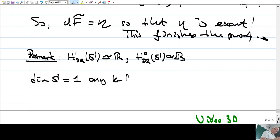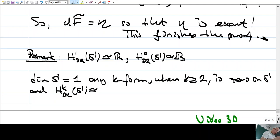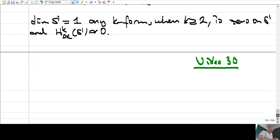Any k-form where k is larger than or equal to 2 is 0 on S^1. And thus, H^k de Rham is isomorphic to 0. So we have computed all the de Rham cohomology groups of circle.